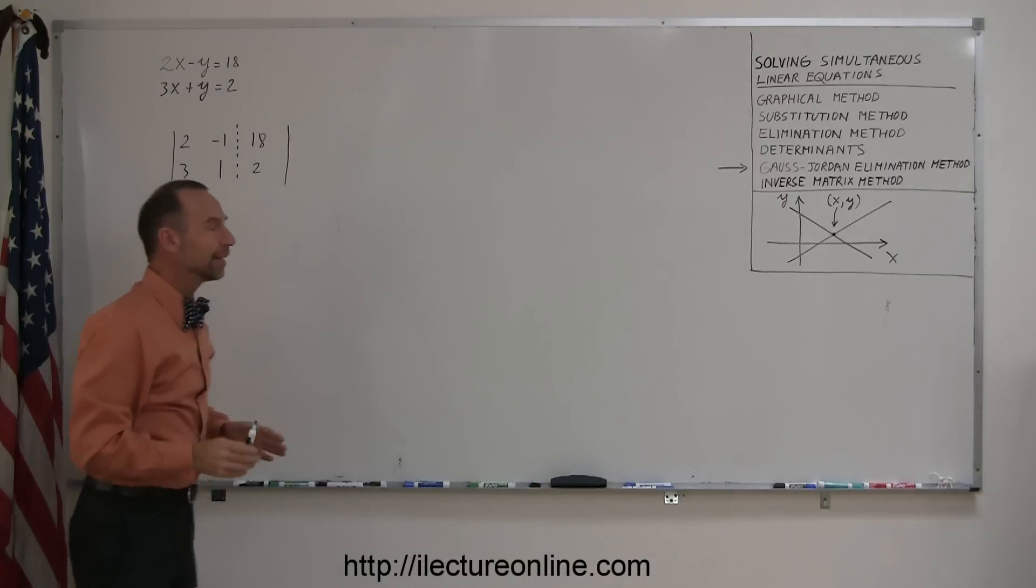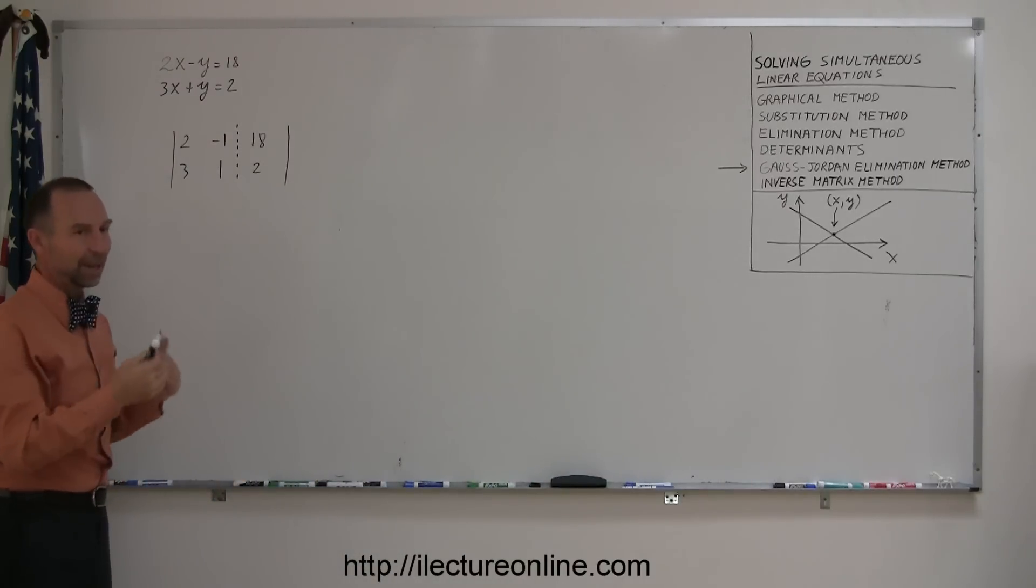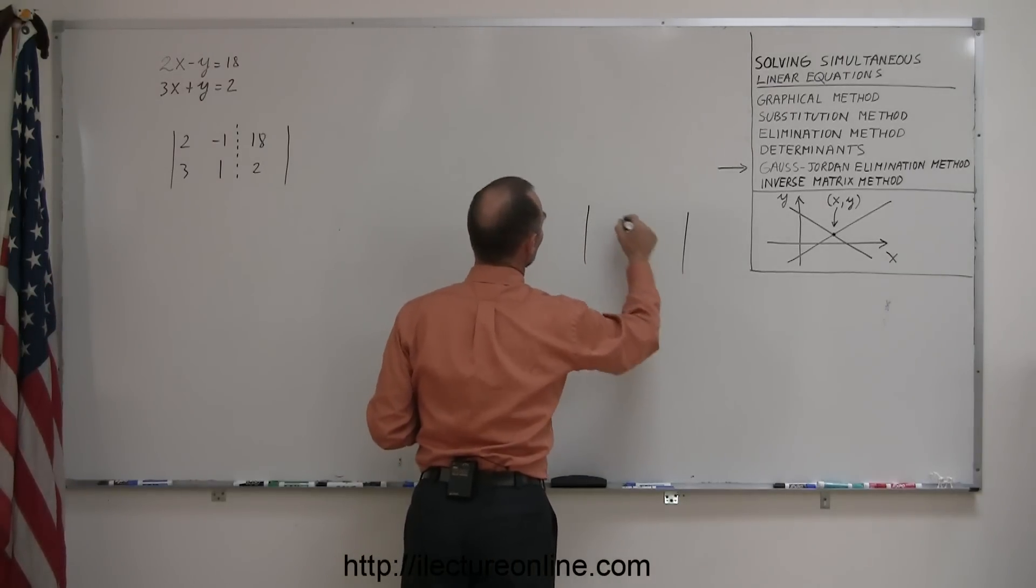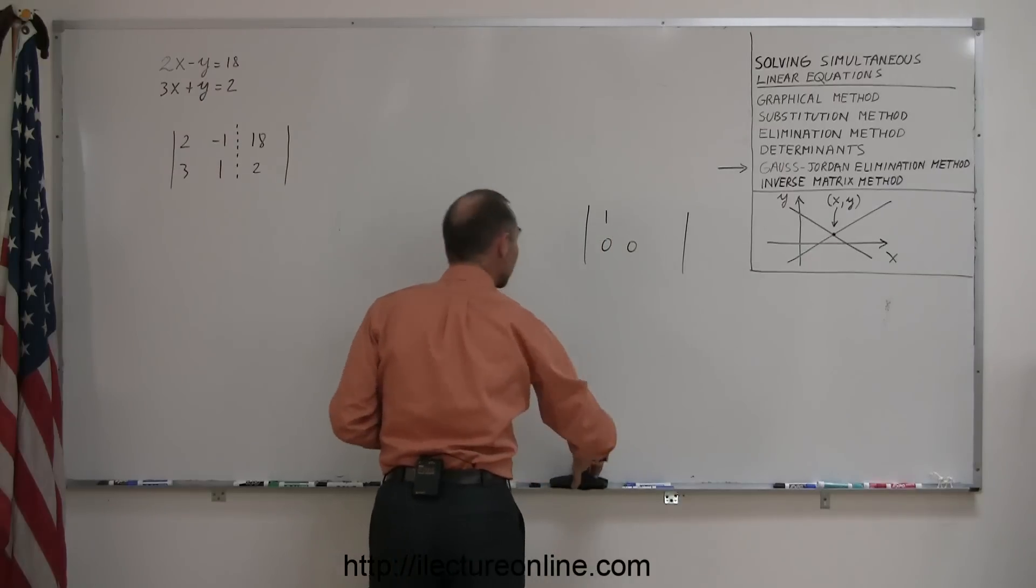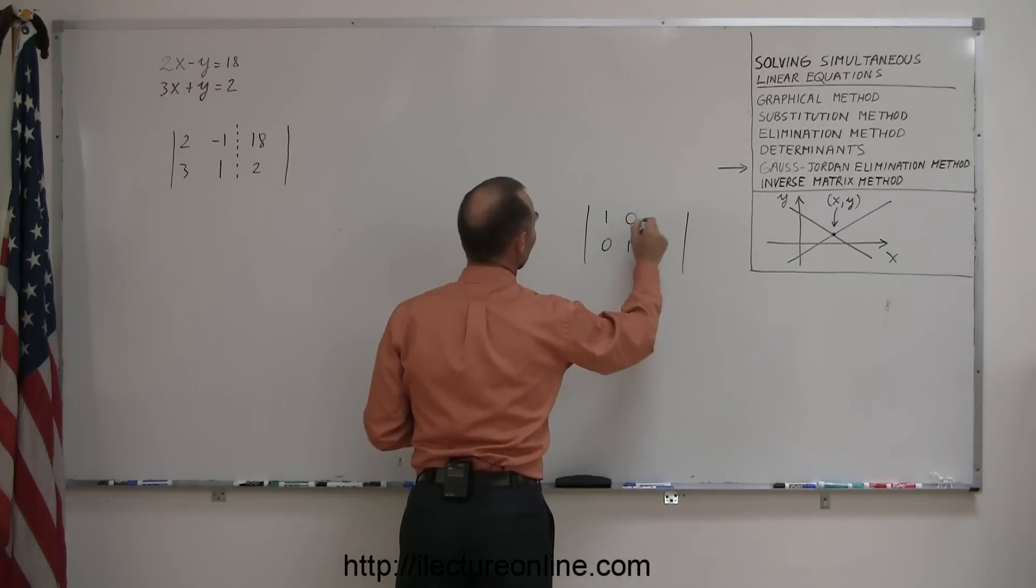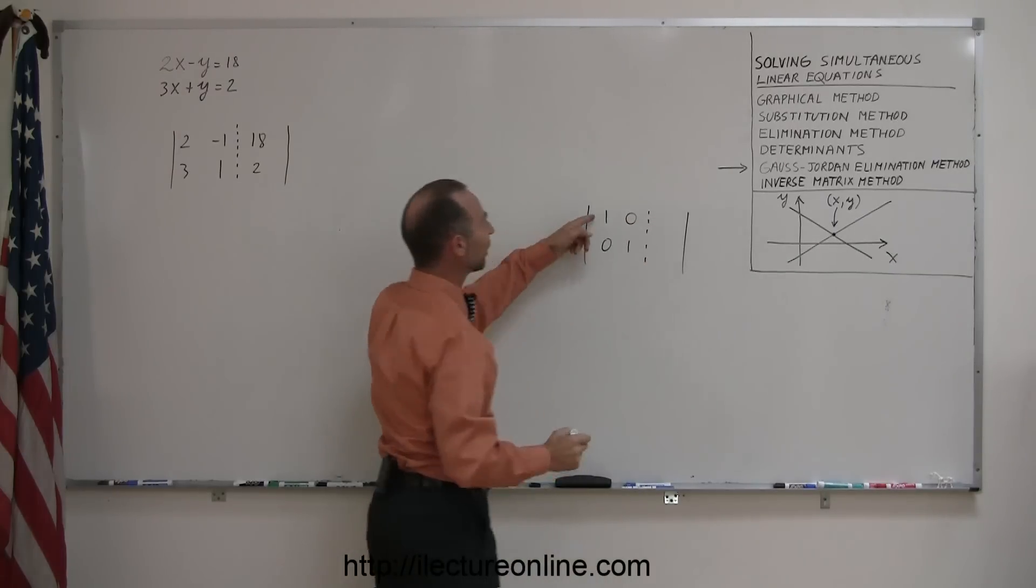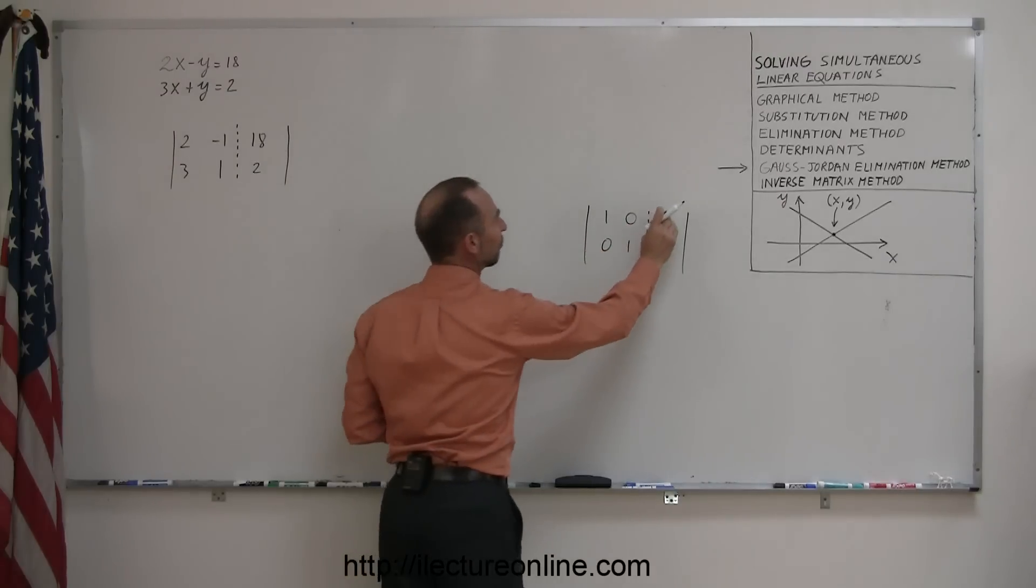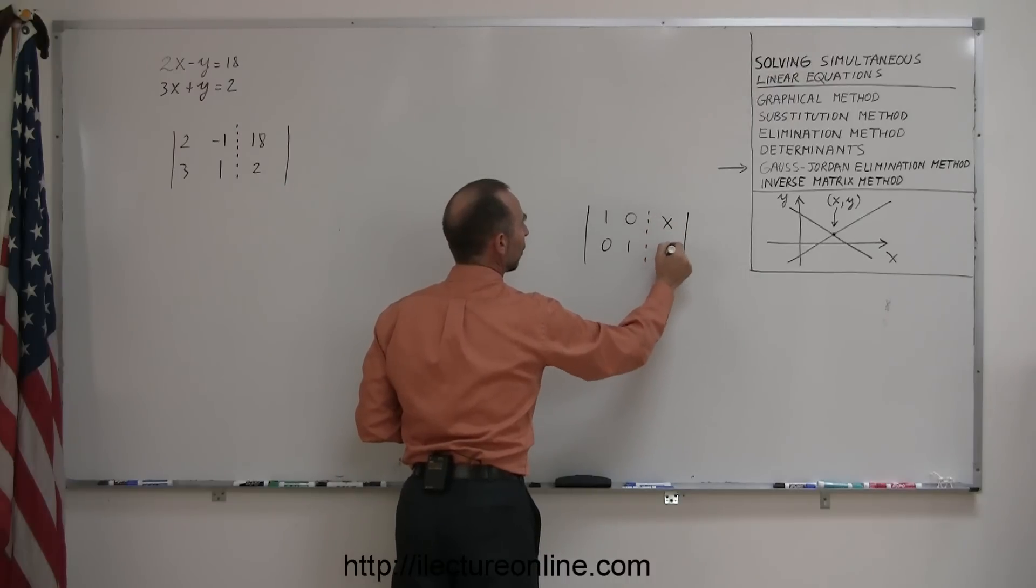Now, the whole idea is you're going to go through a set of steps, a set of operations, in such a way that at the very end, when you're all done, you end up with something that looks like 1, 0, 0, 1.